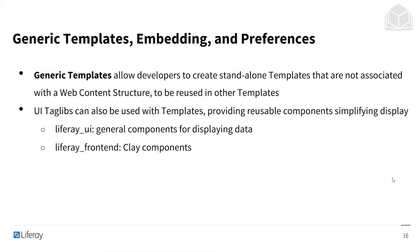Generic templates allow developers to create standalone templates that aren't associated with a particular web content structure, to be reused in other templates. For example, you might have a picture field that you want to display a certain way — across magazine articles, magazine images, and magazine cover pages. You could create a generic template for an image and reuse it across all of those templates.